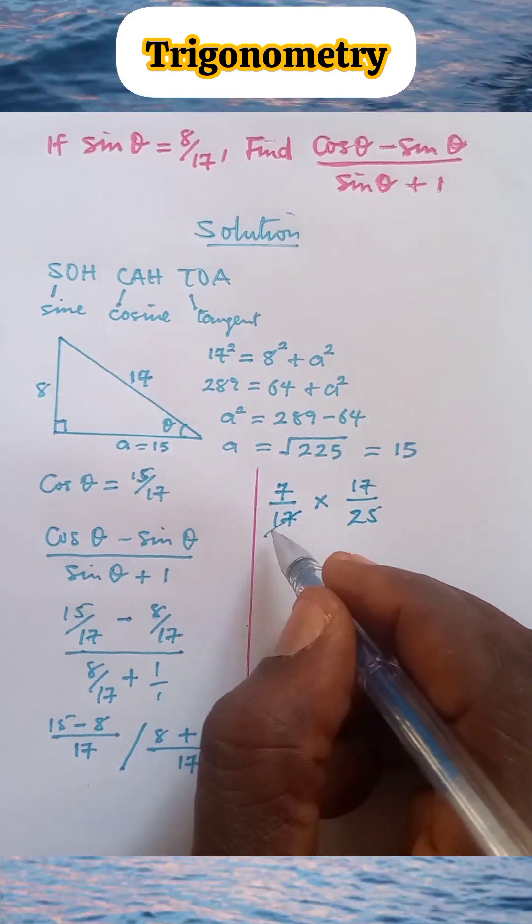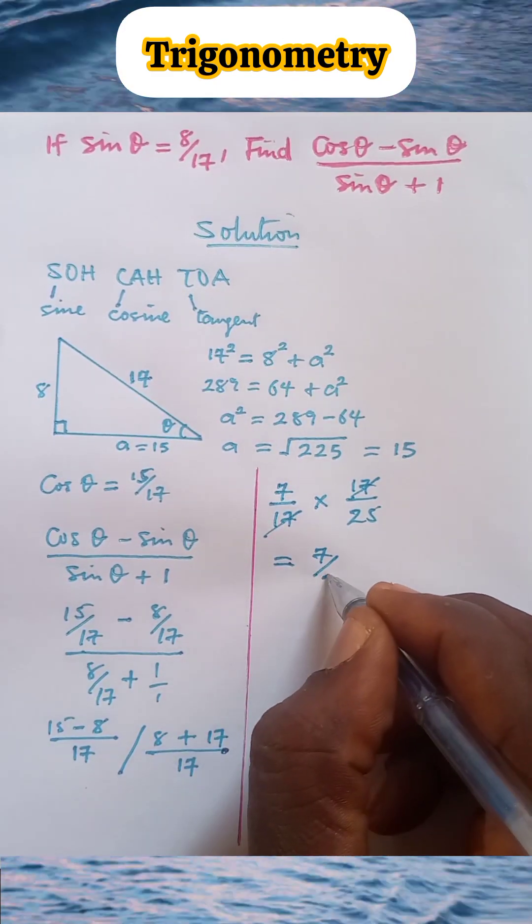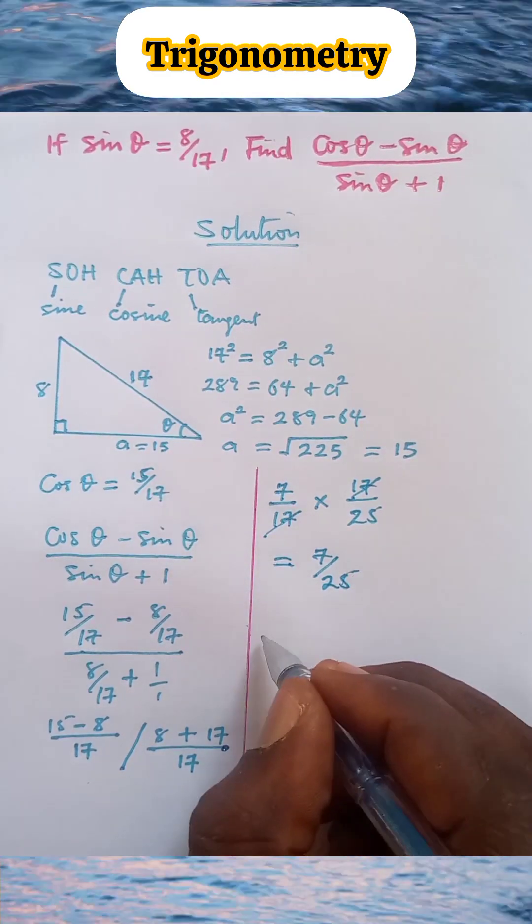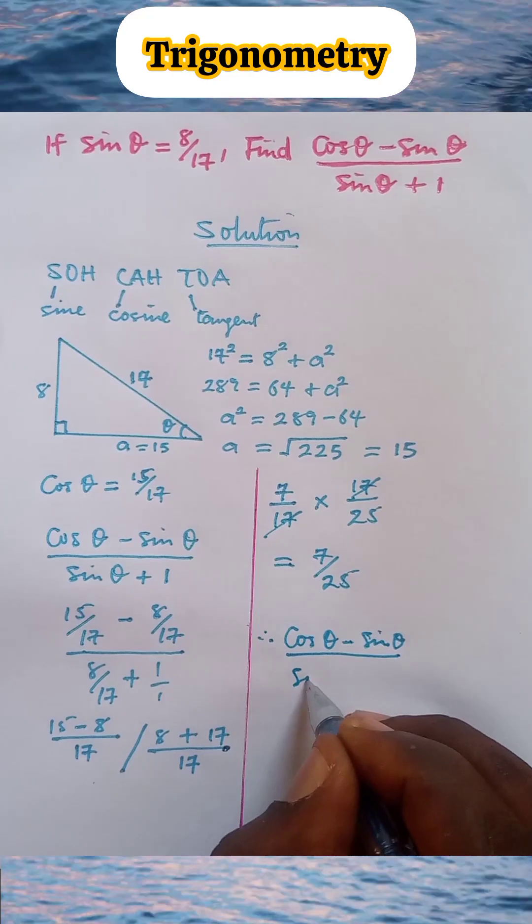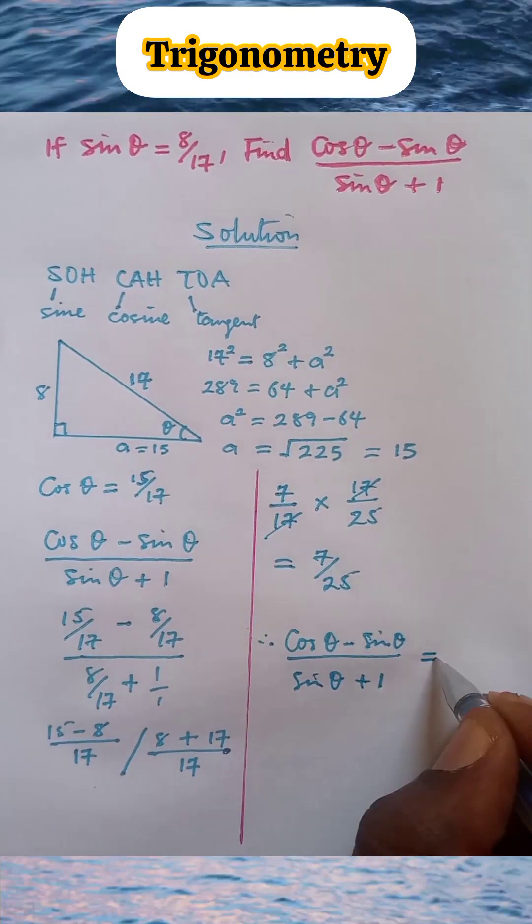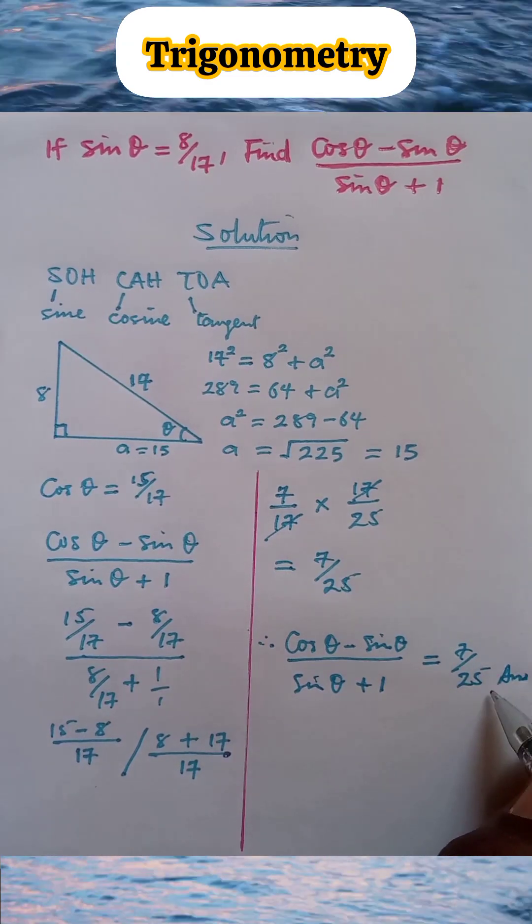Here 17 strike out 17, and what we have here is 7/25. Therefore, (cos θ - sin θ)/(sin θ + 1) = 7/25, and this becomes the final answer. Thank you.